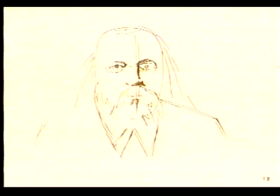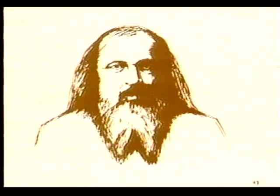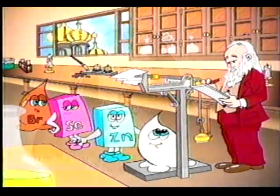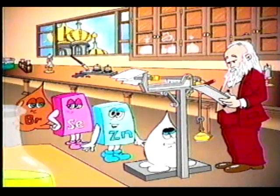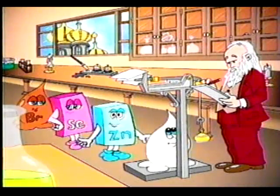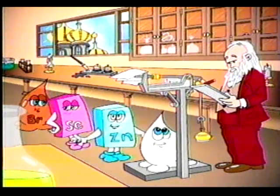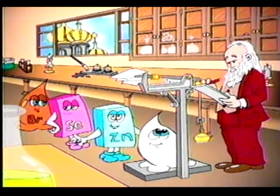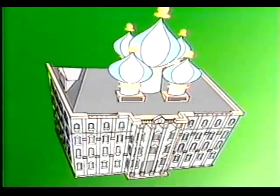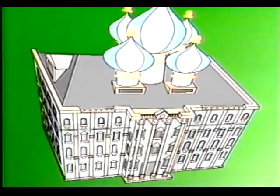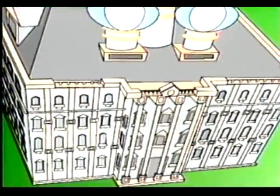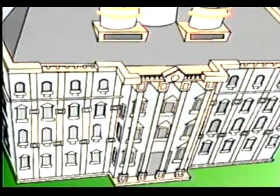Los electrones se encuentran girando muy rápido alrededor del núcleo, recorriendo sus órbitas o niveles de energía. La primera organización de la tabla periódica en columnas y pisos se le atribuye al químico ruso Dmitry Mendeleev, quien en el siglo XIX recopiló información acerca de las propiedades físicas y químicas de los 63 elementos conocidos hasta ese momento.